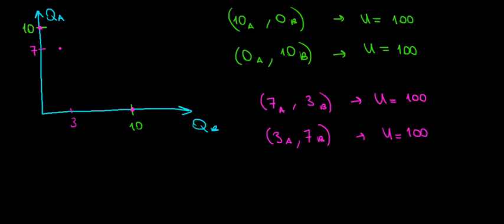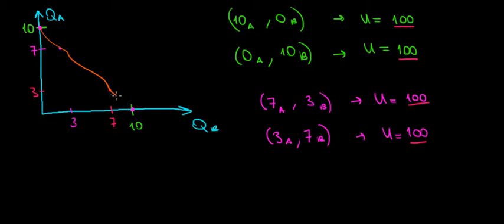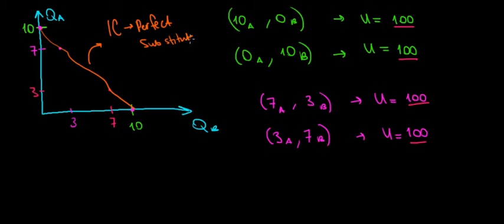That would be somewhere over here — three kilos of apples and seven kilos of bananas. Let's connect these points. Remember, we have the same utility level for different combinations — that set of combinations is called an indifference curve. If we connect all these points, it forms a straight line. This would be an indifference curve for perfect substitutes. We can substitute apples for bananas at the same rate, one for one. The slope is negative one because the exchange is one to one.